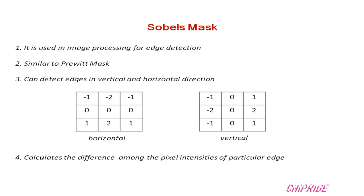Sobel's mask can detect edges in the vertical and horizontal direction, which is called the vertical gradient or the horizontal gradient. You can see the mask of Sobel's here, where we have the numbers in the 3x3 matrix, or the mask, or you can say the sliding window. For horizontal: minus one, minus two, minus one, then zero, zero, zero, then one, two, one. For vertical, the column is minus one, minus two, minus one, zero, zero, zero, and one, two, one.